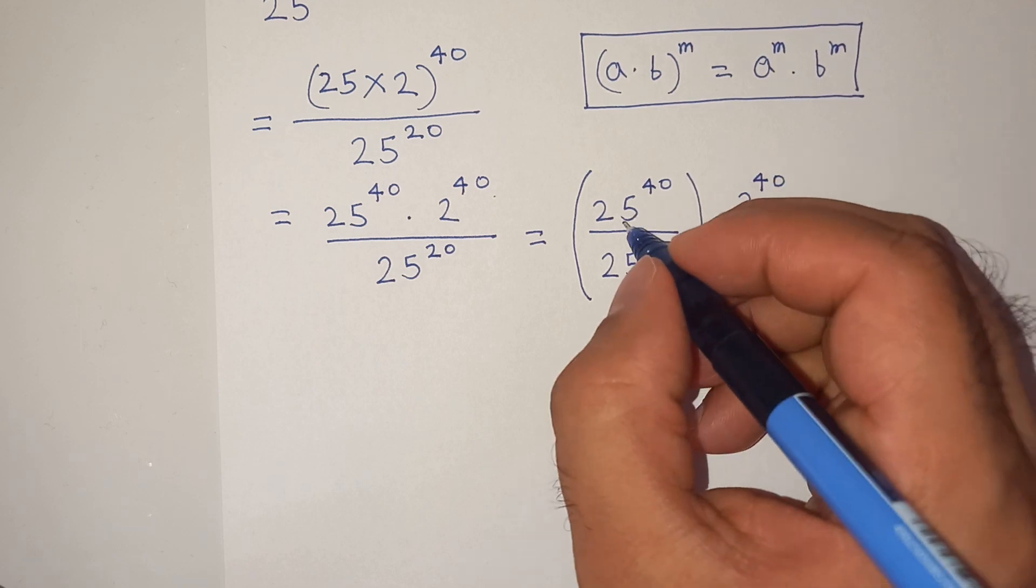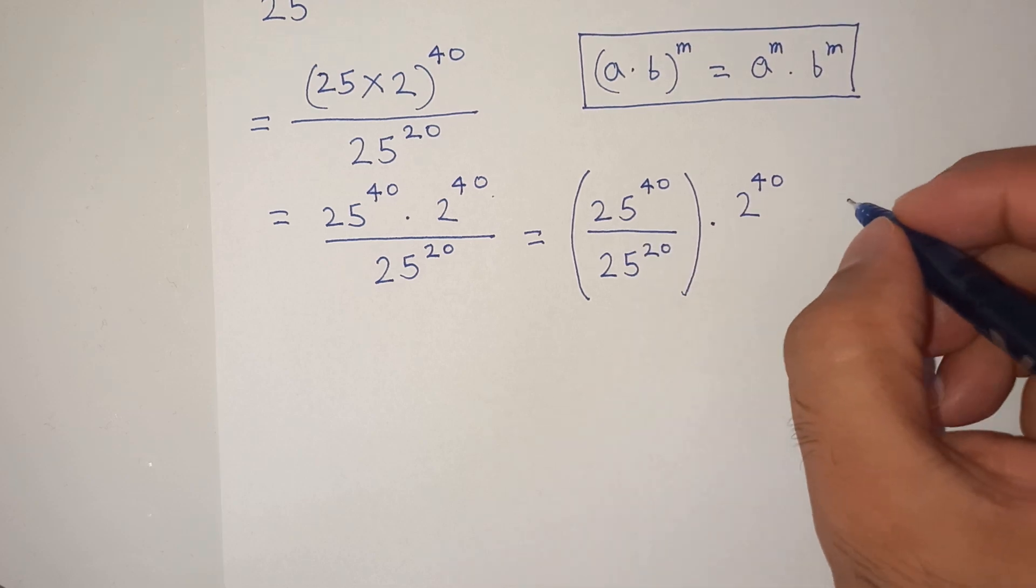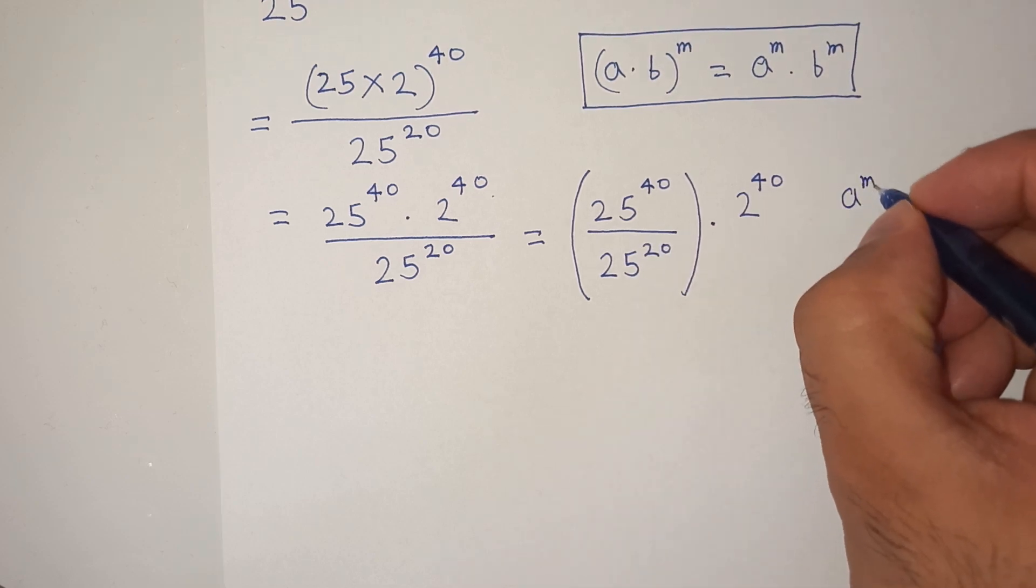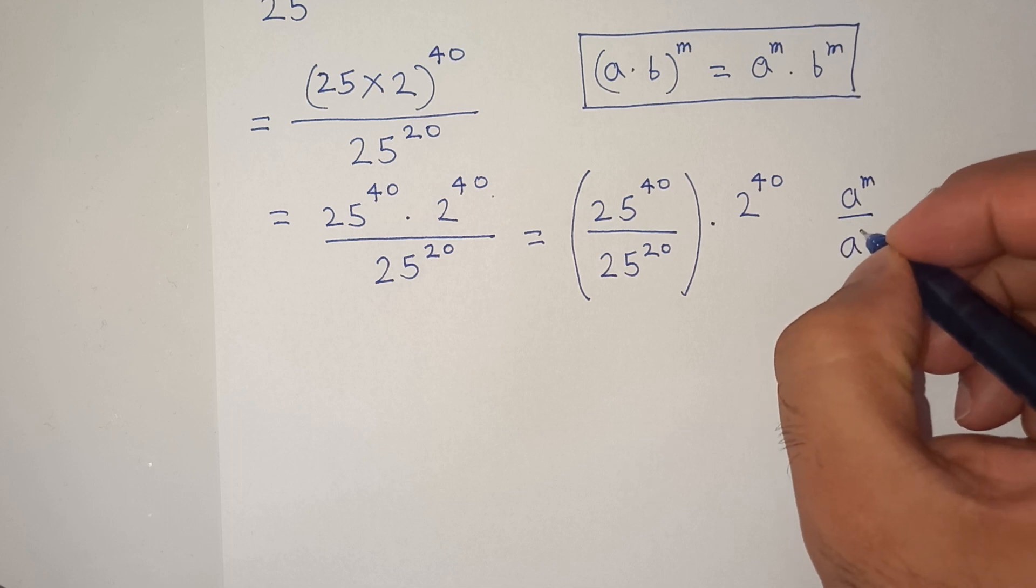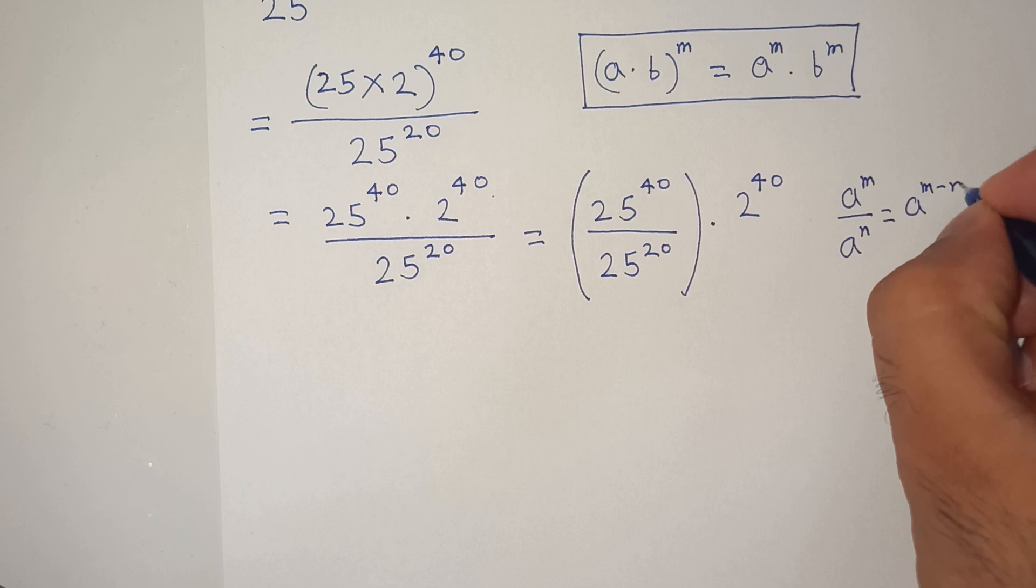So as you can see the base 25 is common in this bracket. So we will apply this exponential rule which is A power M divided by A power N equals A power M minus N.